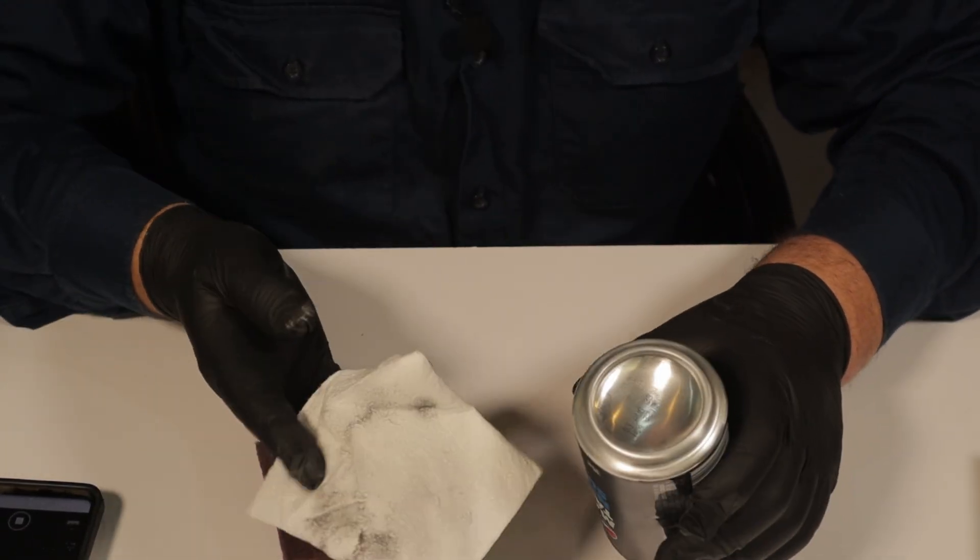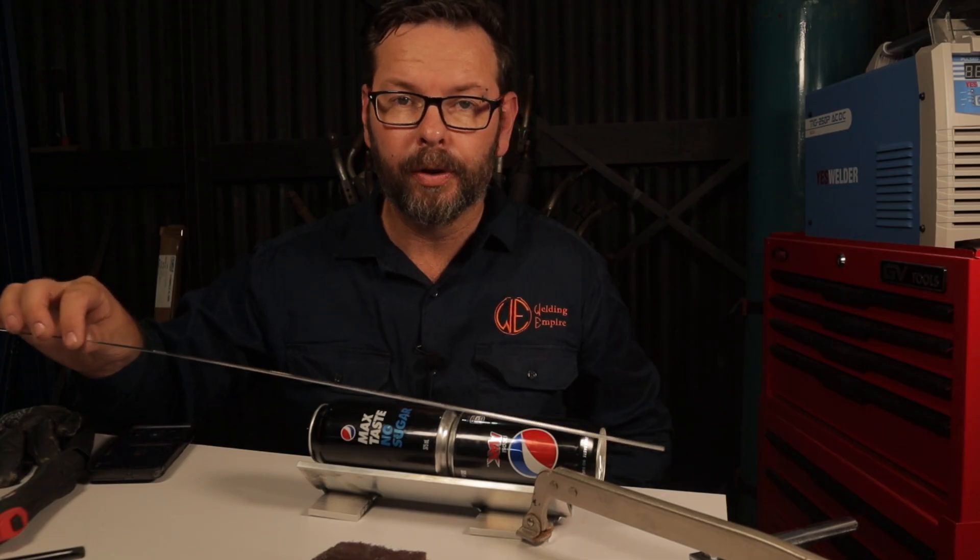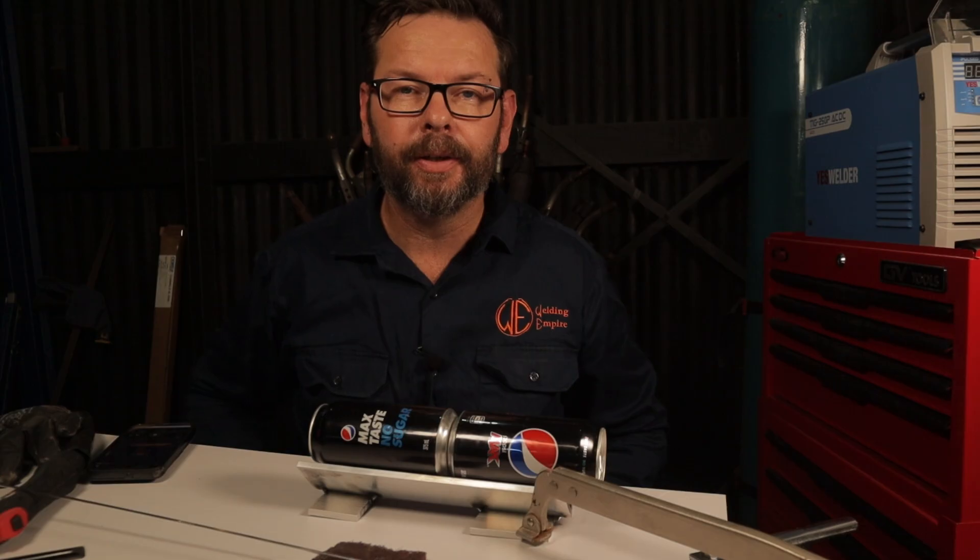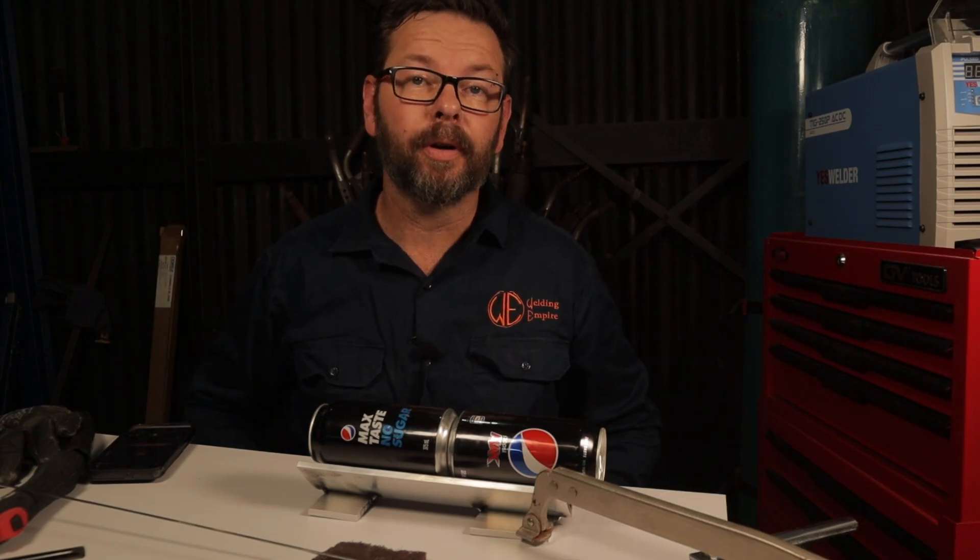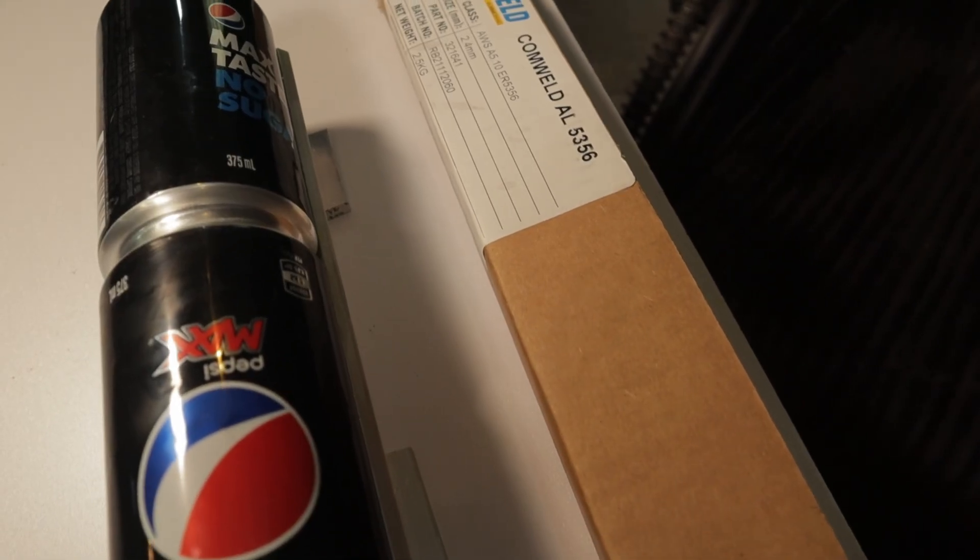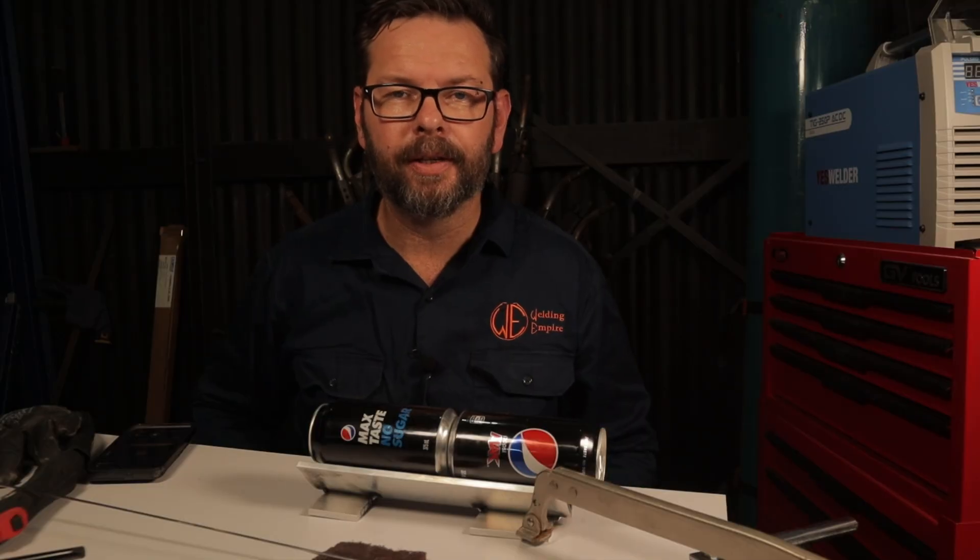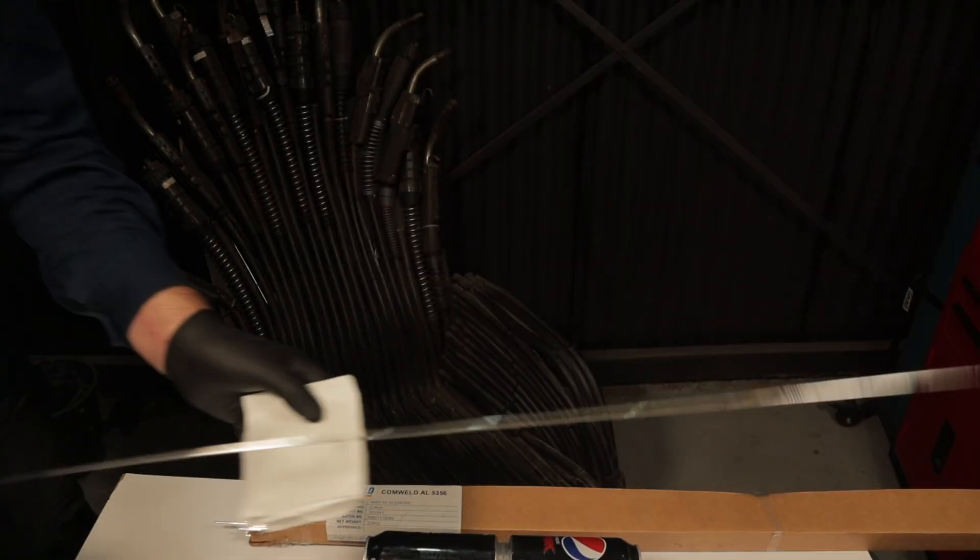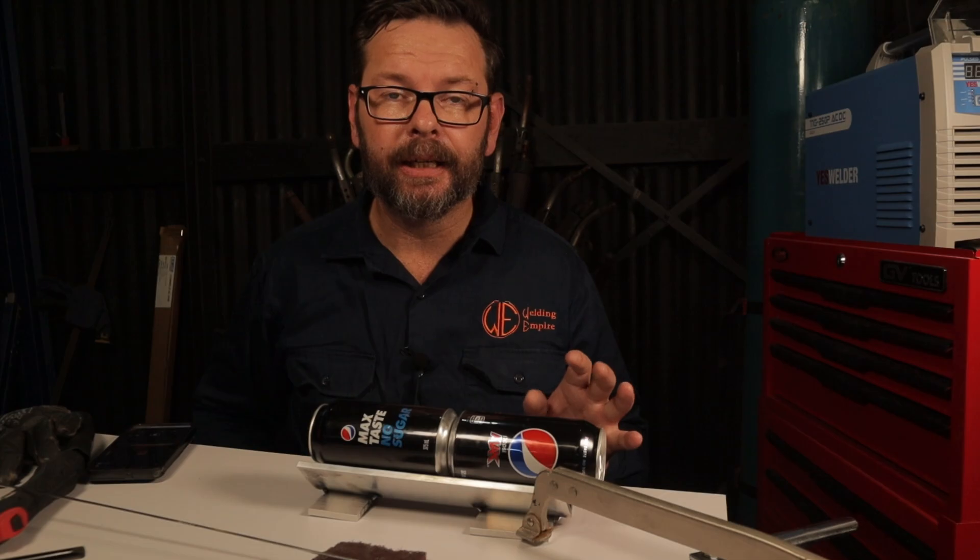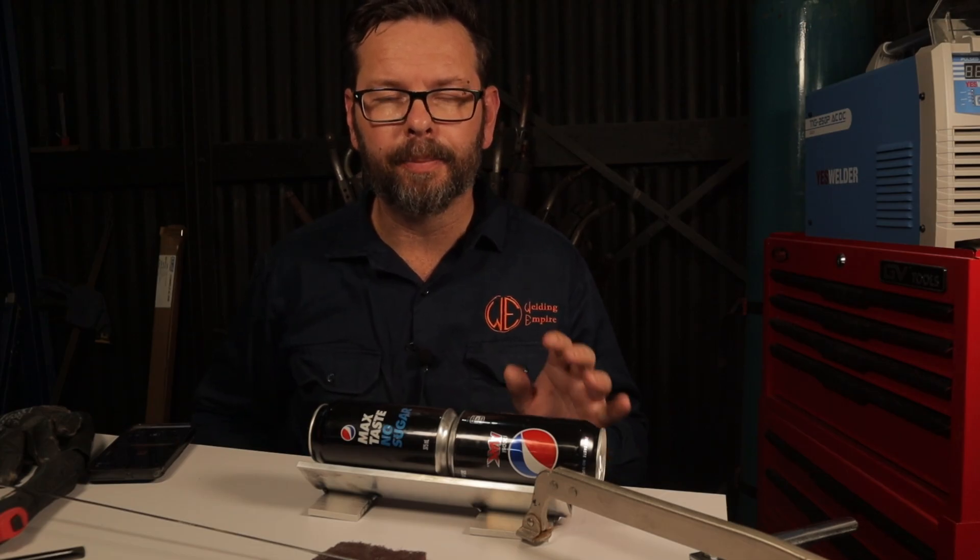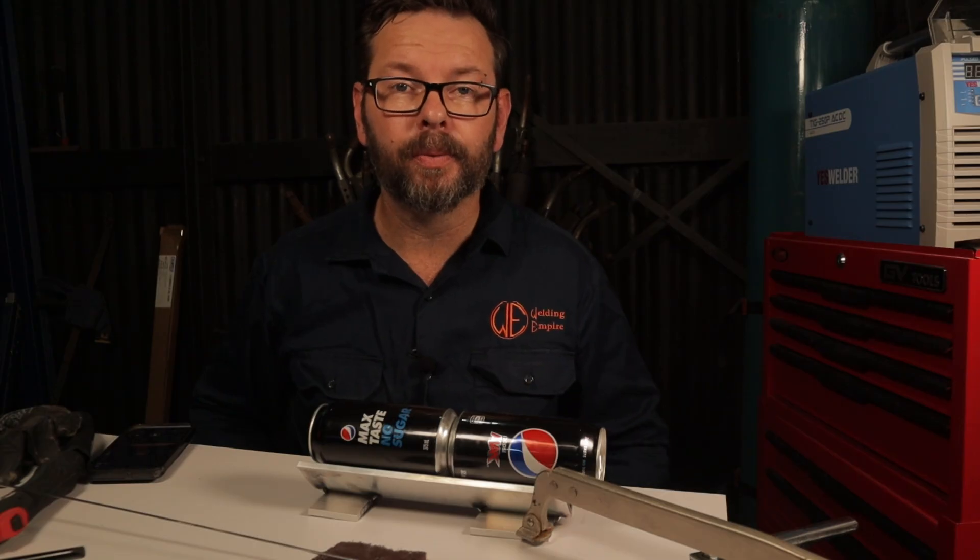For the TIG wire I'm using is 3/32nd or 2.4 millimeter 5356. It's mainly used in the marine industry for its corrosion resistance. I use it for cast aluminum repairs. It's a little big for what I'm doing here, but I'm going to use it as a heat sink to take some the heat away from the aluminum cans. Another thing with this wire is if you're ever getting anything anodized, it is going to anodize the same color as the parent material. Some of the other wires won't do this.